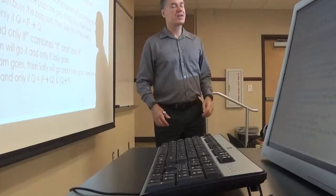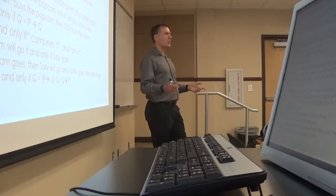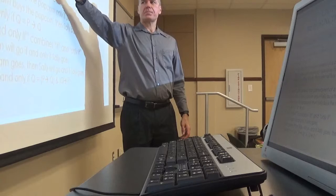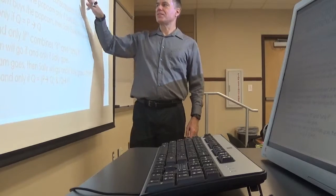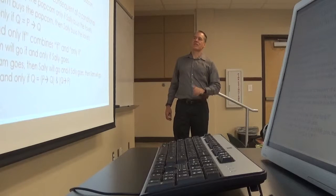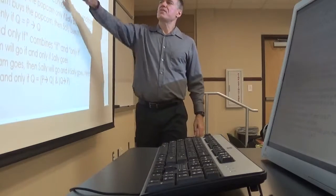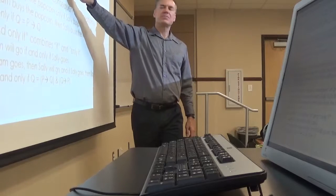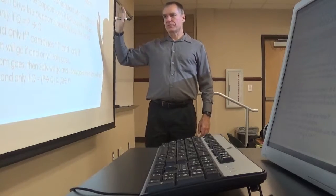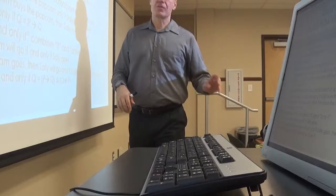One thing that can throw people off is that it's not the order in the sentence where something appears that makes it the antecedent or the consequent — it's where the 'if' is. So in this case: 'Sam will buy the popcorn if Sally buys the tickets.' Sam buying the popcorn comes first, but if we said 'if Sam buys the popcorn and Sally buys the tickets' we'd get things in the wrong order. The 'if' — even though the Sally part is second — tells us it's pointing to the antecedent. So this becomes: if Sally buys the tickets, then Sam will buy the popcorn.